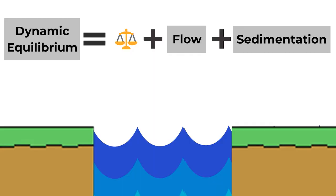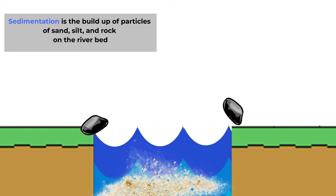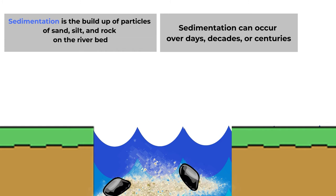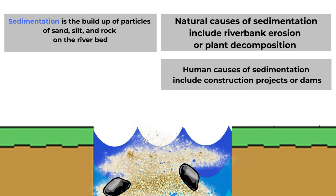Sedimentation is the other dimension of dynamic equilibrium and refers to the buildup of sediment like rocks, pebbles, mud, and silt. Sedimentation can happen over the course of days, decades, or even centuries and can have natural or man-made causes. One of the most dramatic impacts of sedimentation is the filling in of rivers and lakes over time, which can impact how we're able to use the river's waterways and resources.